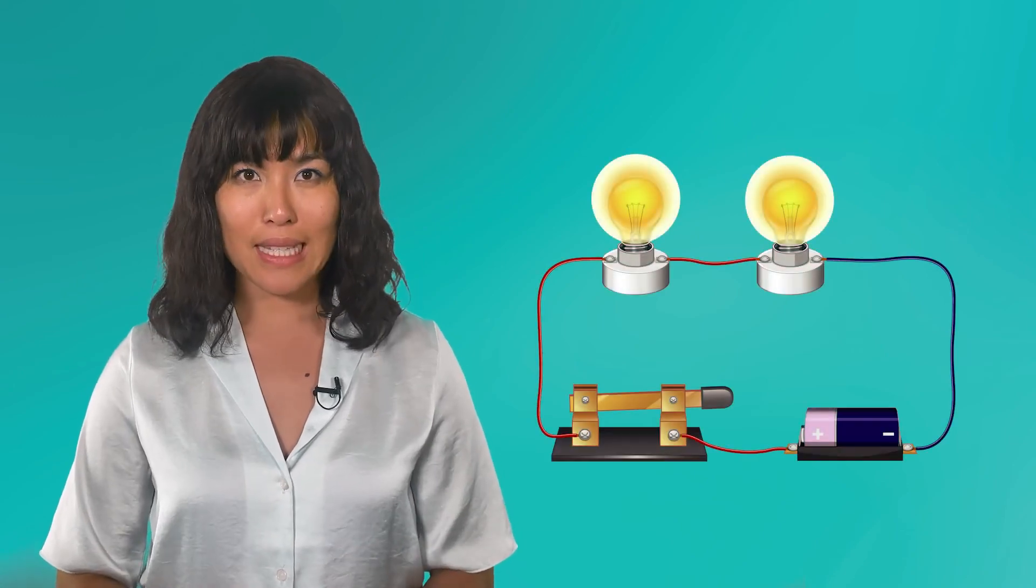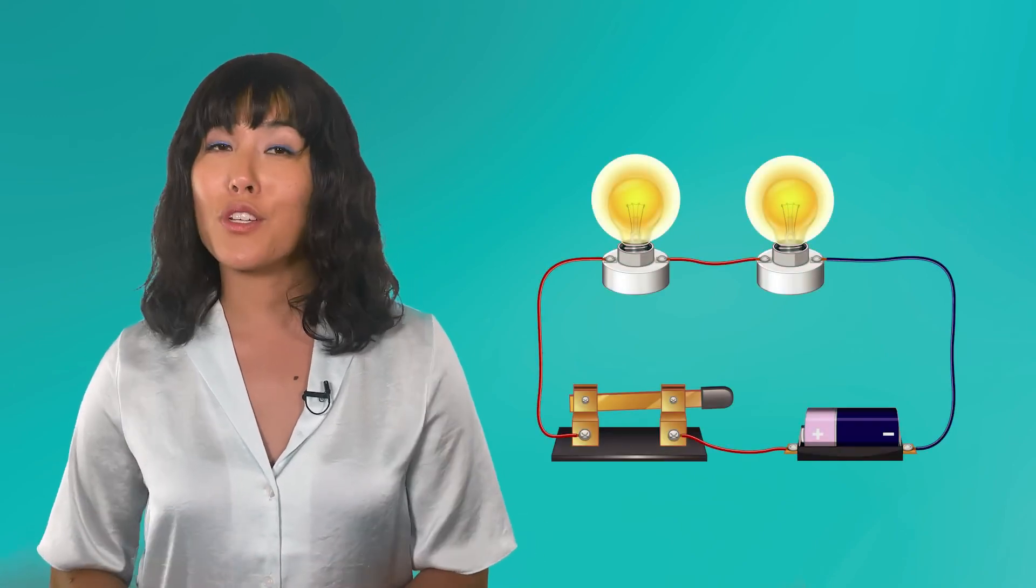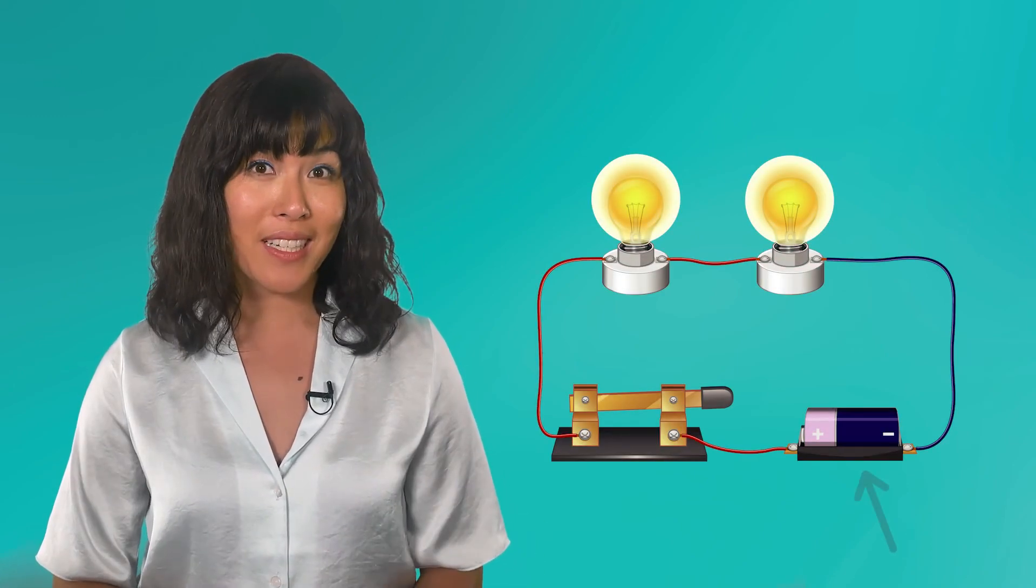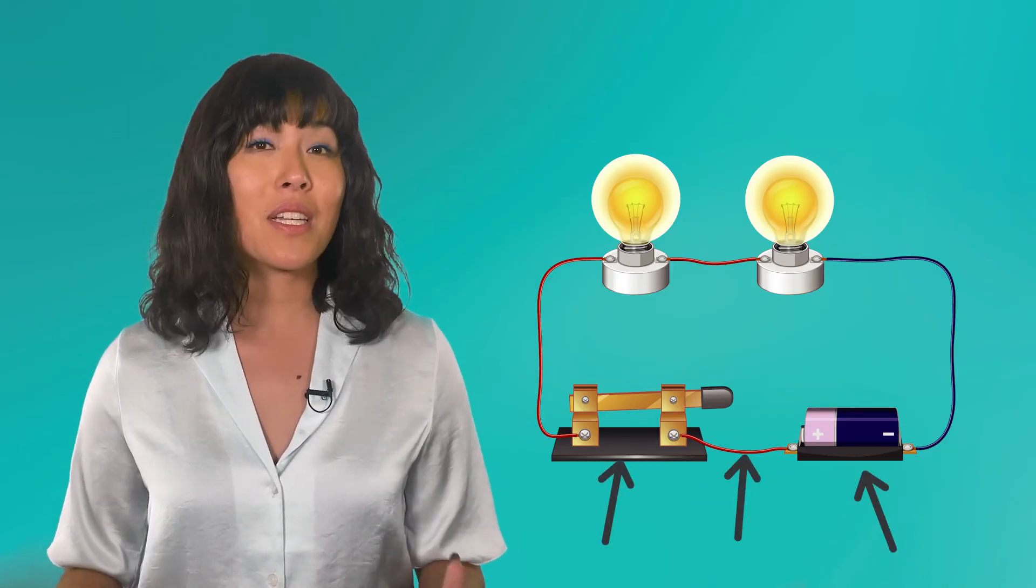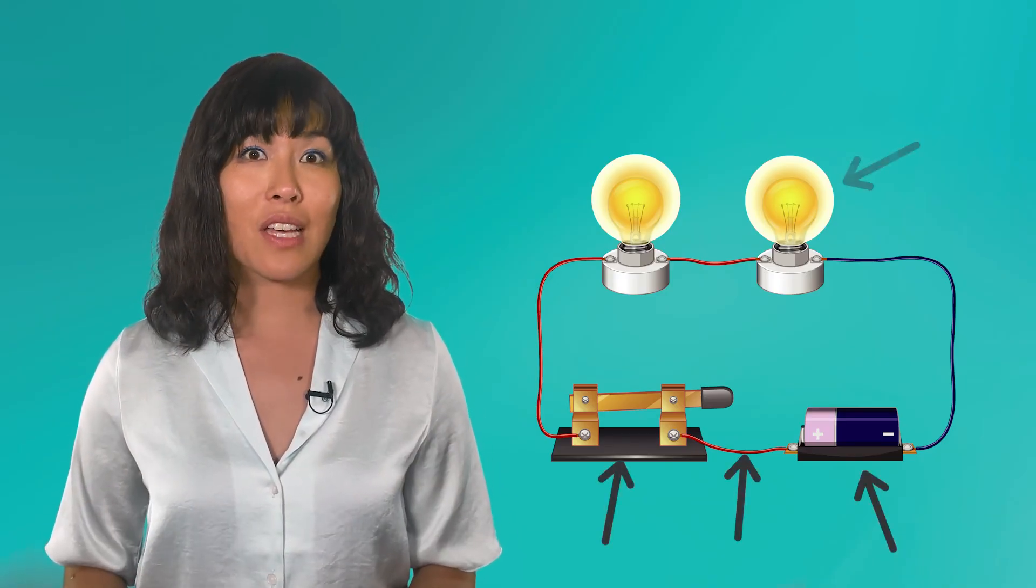As we went through the lesson today, we saw the main components of circuits: a voltage source such as a battery, wires, switches, and something to use the electricity such as a bulb.